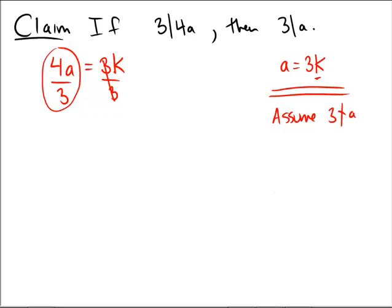So what would that mean? Well, that would be kind of two different cases, wouldn't it? One would be that a is equal to 3 times something plus 1, right? One left over. Or a could possibly be 3k plus 2, where k is an integer. Now, in these two cases, what would happen?